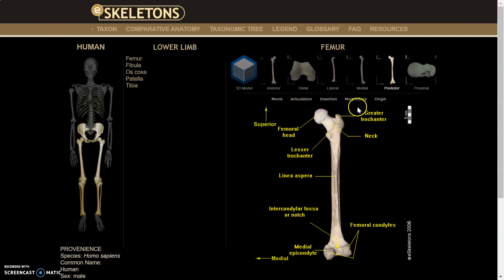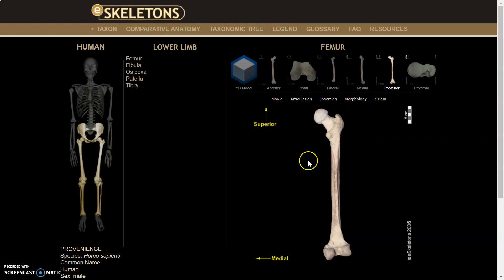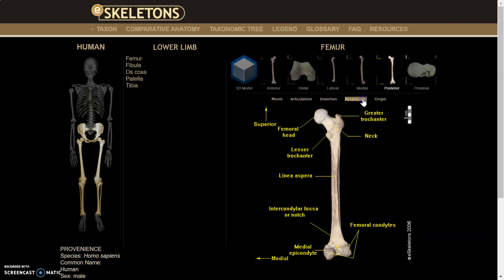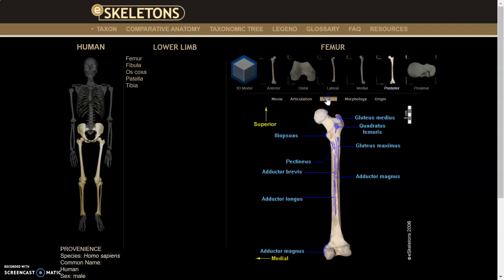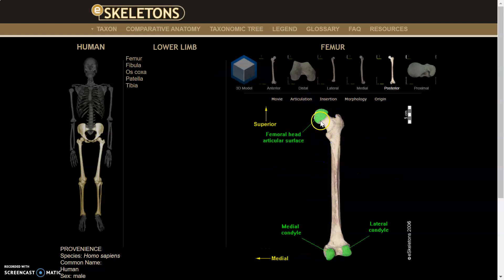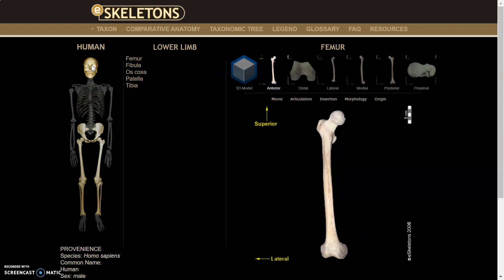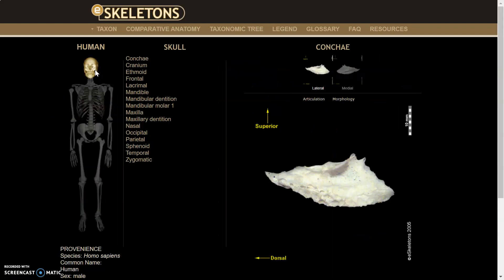When you're reviewing, you could pull up this image, write down the features that you see, then pop it back up and see if you got the correct answer. You can also look at the insertions — these are muscular, and I'm not going to test you on that, but if you're doing anatomy it's really helpful. You can also look at articulations with other bones — for example, the medial and lateral condyles articulate with the tibia.